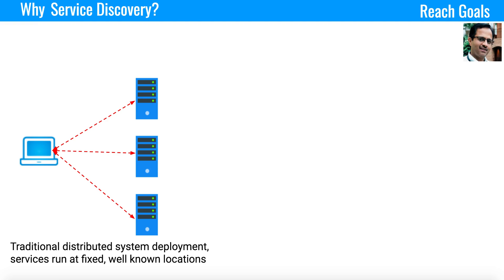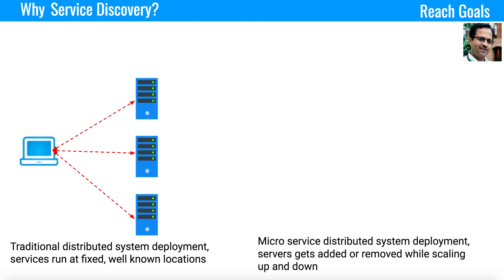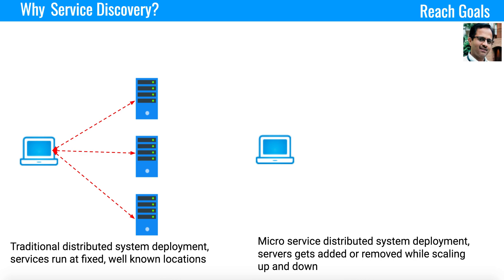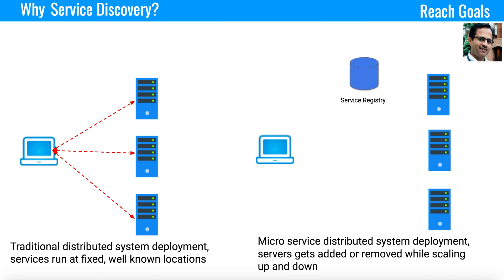In a microservice architecture, there is a bit of complexity in discovering services. You have a client that connects to different servers, and those servers run multiple services. Since it is a microservice distributed system, you have a mechanism to auto scale up or auto scale down. This means the IP address of the system keeps changing — it is not a static IP address. So how will the client know the IP address? That is why we introduce a new component called the service registry.